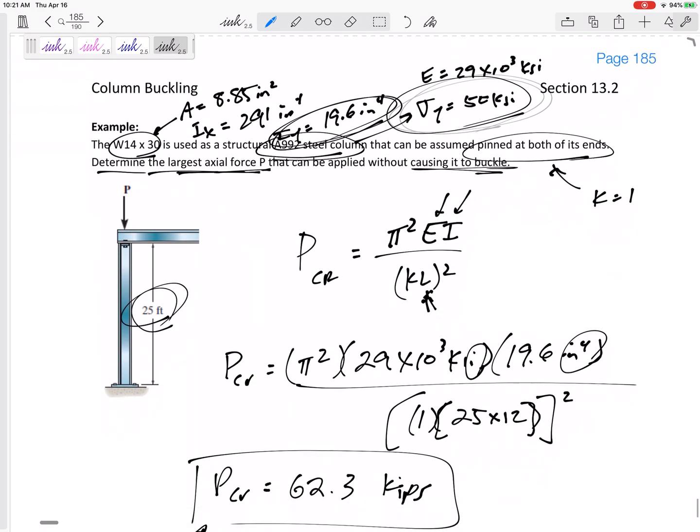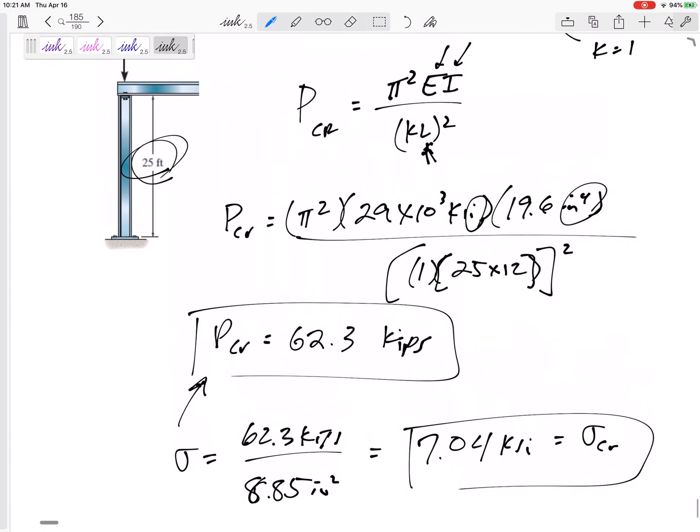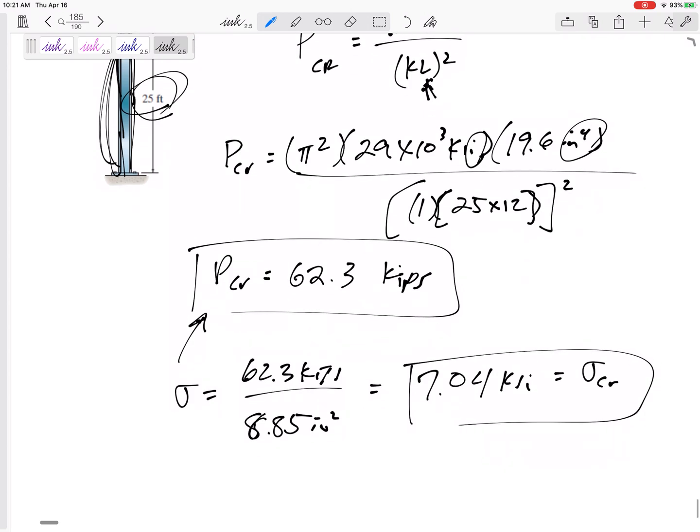It will buckle at a stress of 7.04 ksi. That is the critical buckling stress. Let's compare that. Yeah, it's going to yield at 50. So, yes, this is so long that it definitely buckles before it gets kind of crushed. Sometimes I think of yielding as kind of crushing. No, this is going to buckle first when it gets to a stress of 7.04, which is a force of 62.3.